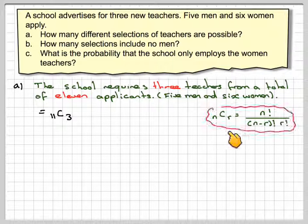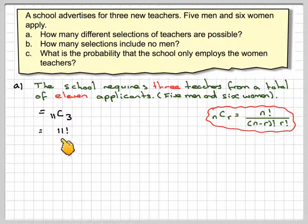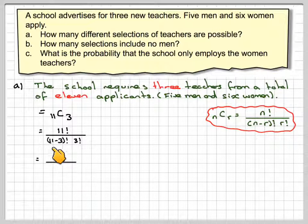Remember, nCr is n factorial over (n minus r) factorial times r factorial. We're going to do this without a calculator. So it's going to be 11 factorial divided by (11 minus 3) factorial times 3 factorial. That gives me 11 factorial divided by 8 factorial times 3 factorial.